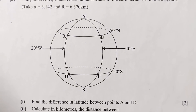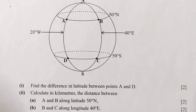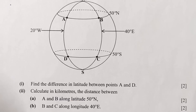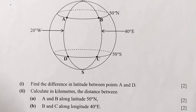The questions we want to answer are as follows. Roman numeral 1: find the difference in latitude between points A and D — two marks. Roman numeral 2 has two parts. Part A: calculate in kilometers the distance between A and B along latitude 50 degrees north — two marks. Part B: B and C along longitude 40 degrees east — two marks as well.